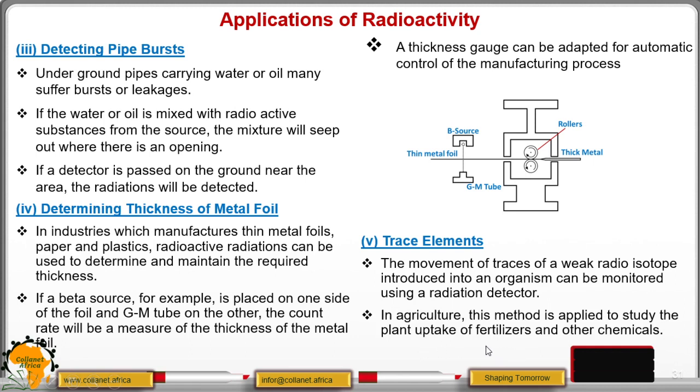In agriculture, this method is applied to study the uptake of fertilizer by the plants and other chemicals. You mix the fertilizer or you introduce the isotope into the plant and the fertilizer. Then from there, using the detector, you can be able to show or to see the traces of the fertilizer and other chemicals because they are mixed with radioactive substance.